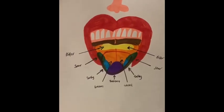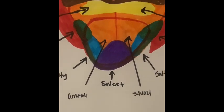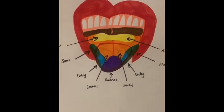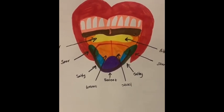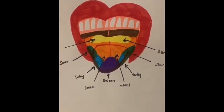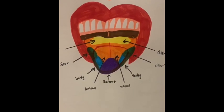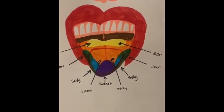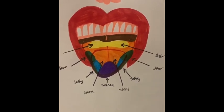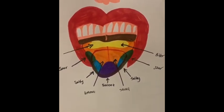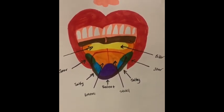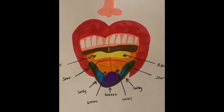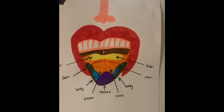Next we have salty, represented in blue on the diagram. Food containing mostly table salt is what we taste as salty. The chemical basis of this is a salt crystal, which consists of sodium and chloride. Mineral salts, like the salts of potassium or magnesium, can also cause a sensation of saltiness.